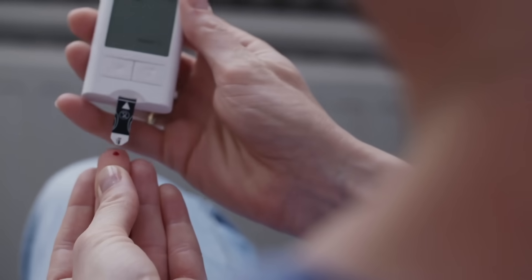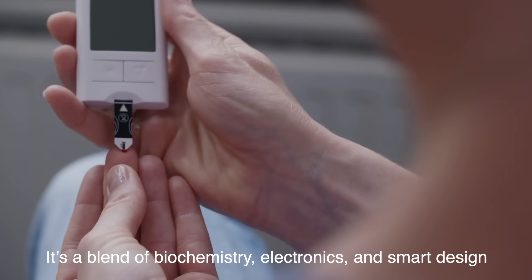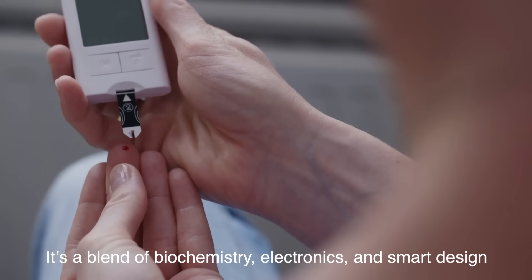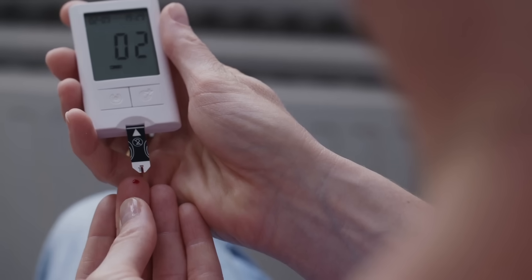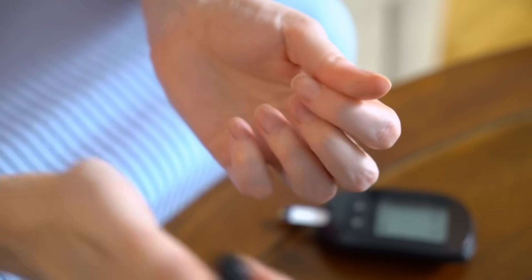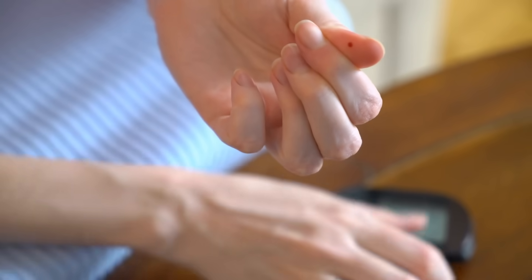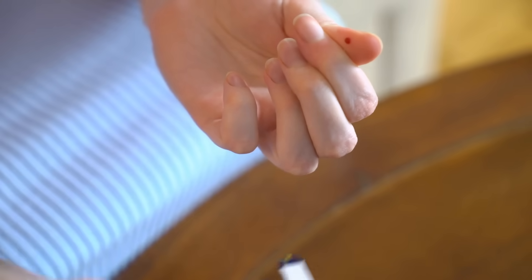So, how does a glucose meter work? In essence, it's a blend of biochemistry, electronics, and smart design. From the enzymes on the test strip to the microprocessor in the meter, every component plays a vital role in transforming a tiny drop of blood into life-saving information.